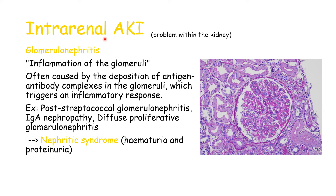Let's talk about glomerulonephritis, one of the causes of intra-renal AKI. This is inflammation of the glomeruli, often caused by the deposition of antigen-antibody complexes, which trigger an inflammatory response. Examples of conditions causing glomerulonephritis include post-streptococcal glomerulonephritis, IgA nephropathy, and diffuse proliferative glomerulonephritis. These can lead to nephritic syndrome, where you see blood in the urine — hematuria — and protein in the urine — proteinuria.